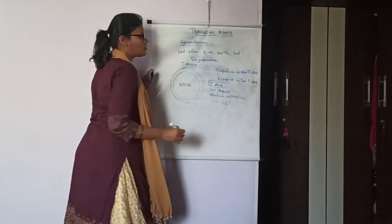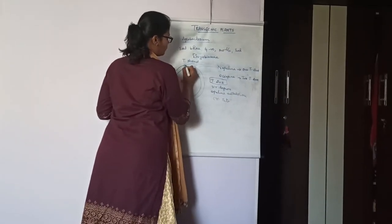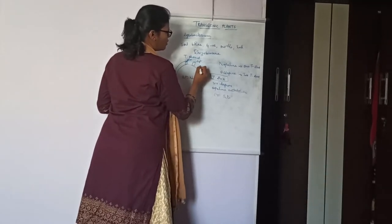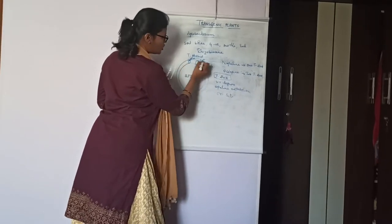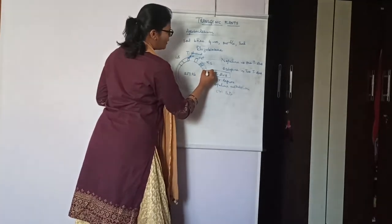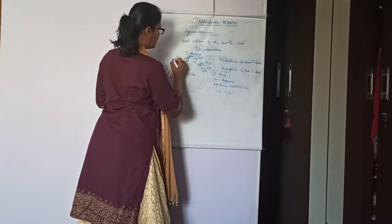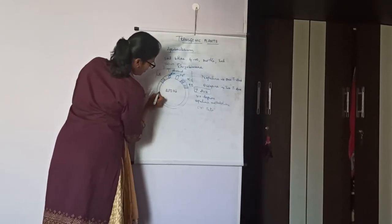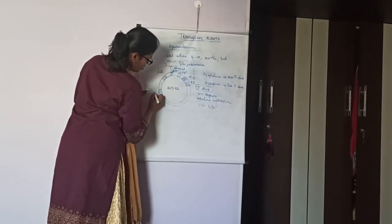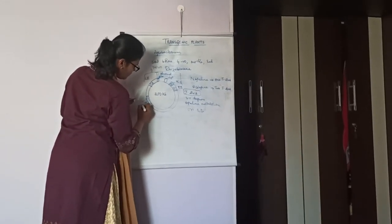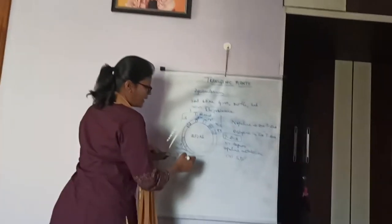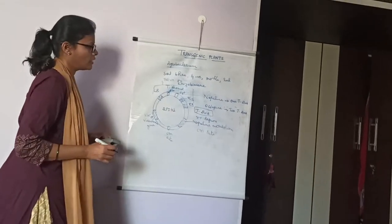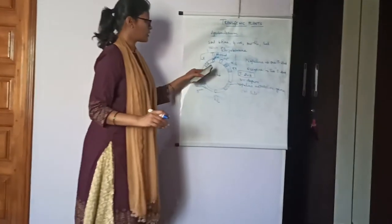The T-DNA is the region which is transferred into the plant's genome. This T-DNA has an AUX gene, CYT gene, and OCS gene, and these genes are flanked between the left border and right border. Together, all these constitute the T-DNA. Outer to this region are the virulence or vir genes. It also has an ori and an opine metabolism gene. This is the structure of the Ti-plasmid.